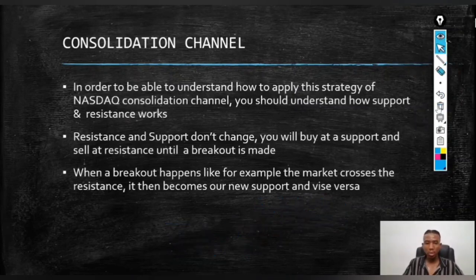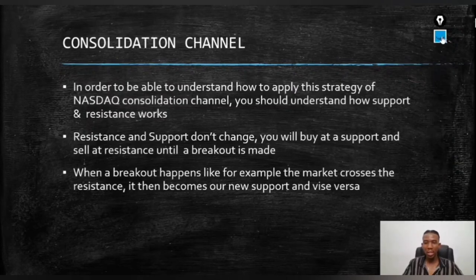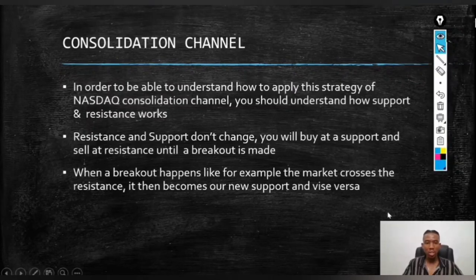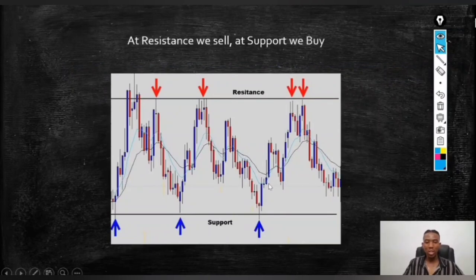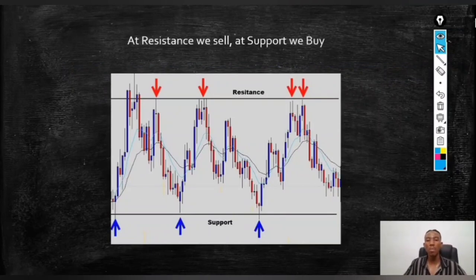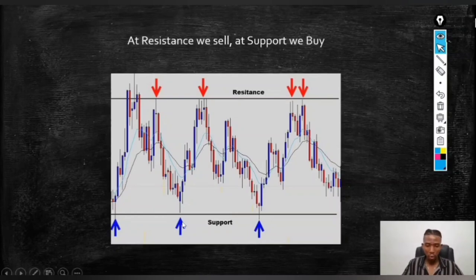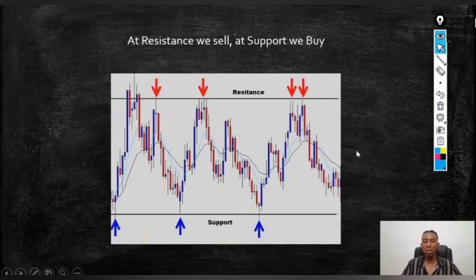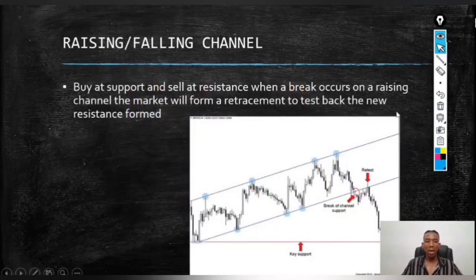A consolidation channel doesn't have an overall directional movement — it's not an overall buy or an overall sell. You simply buy low and sell high: buy at support and sell at resistance. That is a consolidation channel.